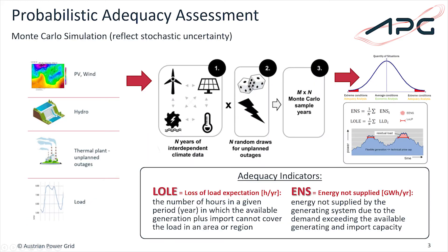How do we now perform such assessments? We apply a probabilistic approach, meaning that Monte Carlo simulations are used in order to reflect stochastic uncertainty. An amount of 35 historic time series is used for PV, wind, hydro, and load, and those time series are merged with a random draw for unplanned outages in order to retrieve a certain amount of Monte Carlo samples.